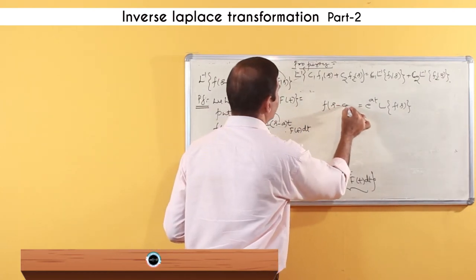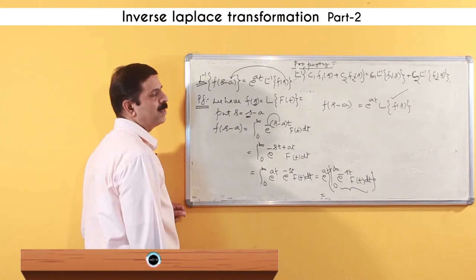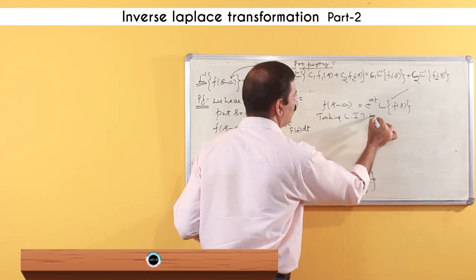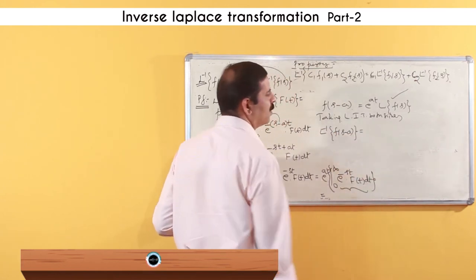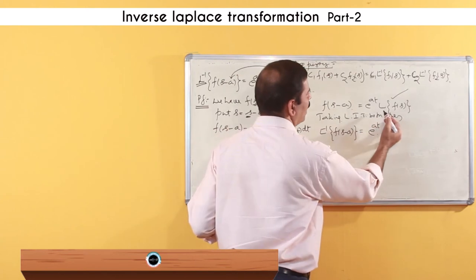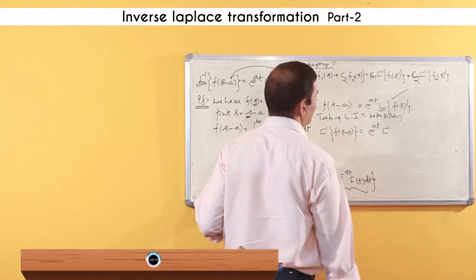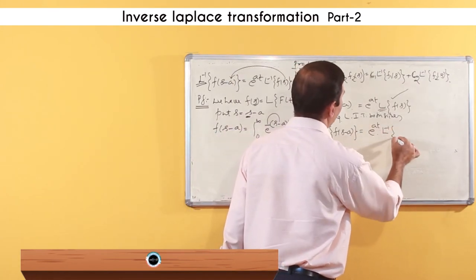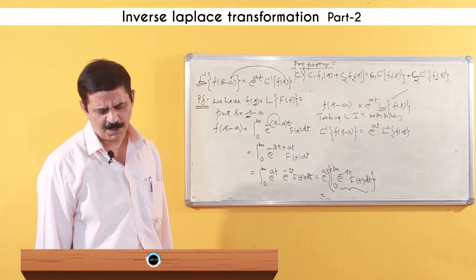This gives F(s−a) = e^(at) · L{f(t)} = e^(at) · F(s). Now taking the Laplace inverse of both sides, L⁻¹{F(s−a)} = e^(at) · L⁻¹{F(s)}, since applying the Laplace inverse to L{f(t)} gives the identity f(t). So the result is proved.